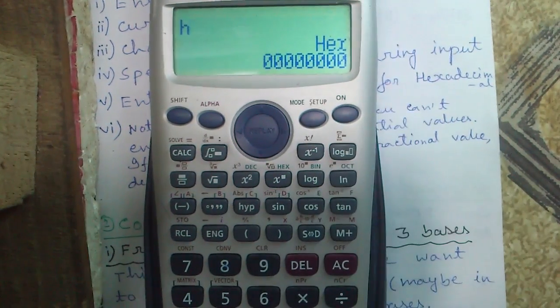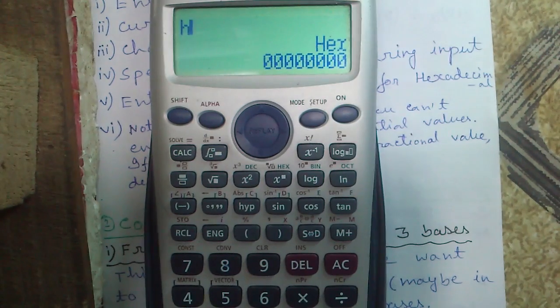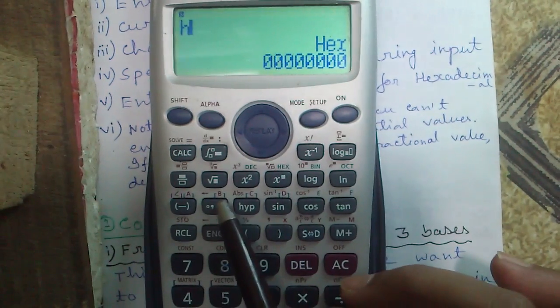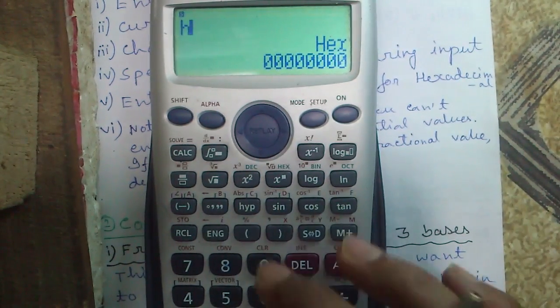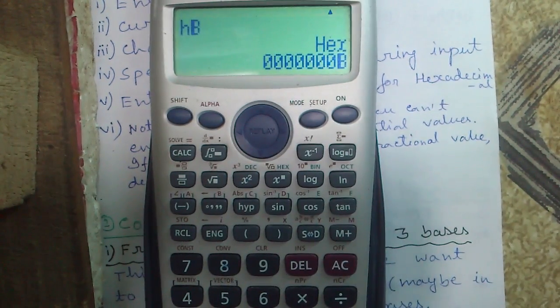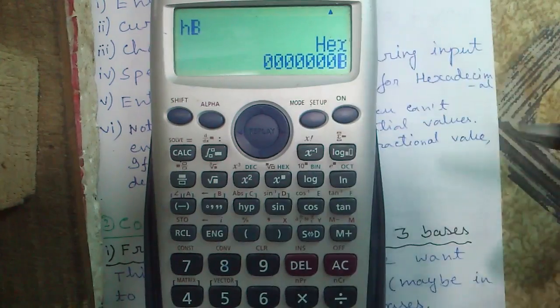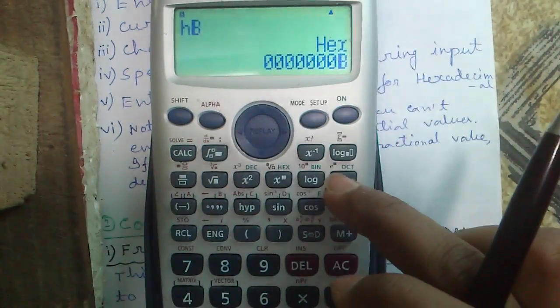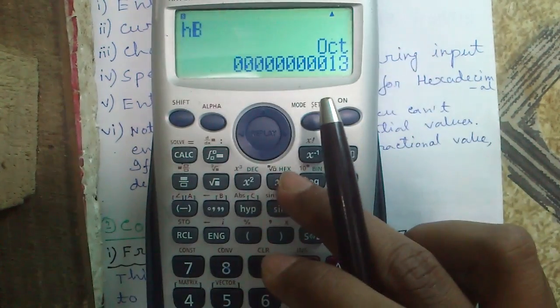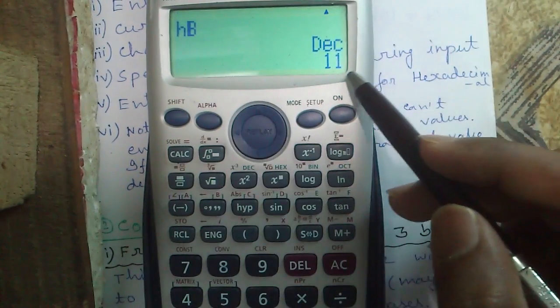Now in hexadecimal number system, other than the numbers 0 to 9, there are 6 letters, a to f. How to get those? Press shift and these 6 buttons, this one for a, this one for b, c, d, e and f. To enter b, press shift and this button, press equals to, so this is b in hexadecimal. To change it in octal, press shift and octal, similarly shift and decimal is 11.